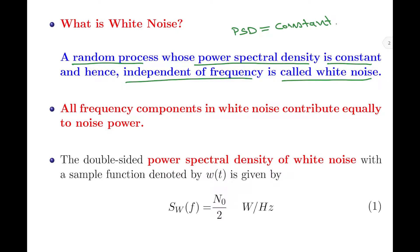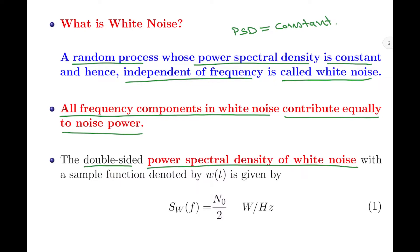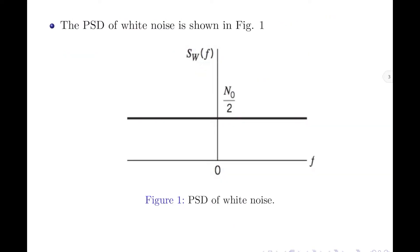When we say the power spectral density is constant, this simply means that all of the frequency components in the white noise contribute equally to the noise power. Therefore, the double-sided power spectral density of white noise, with sample function denoted by w(t), is given by S_w(f) = N₀/2 watts per hertz. This is a constant value. Figure 1 shows the PSD of white noise, which is spread over the frequency range from minus infinity to plus infinity.